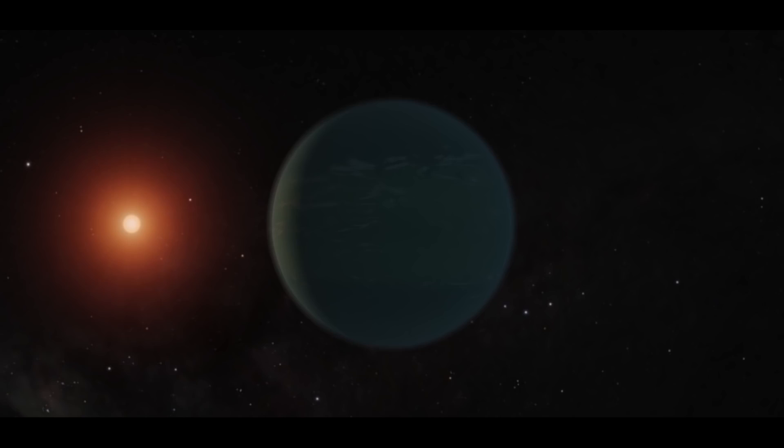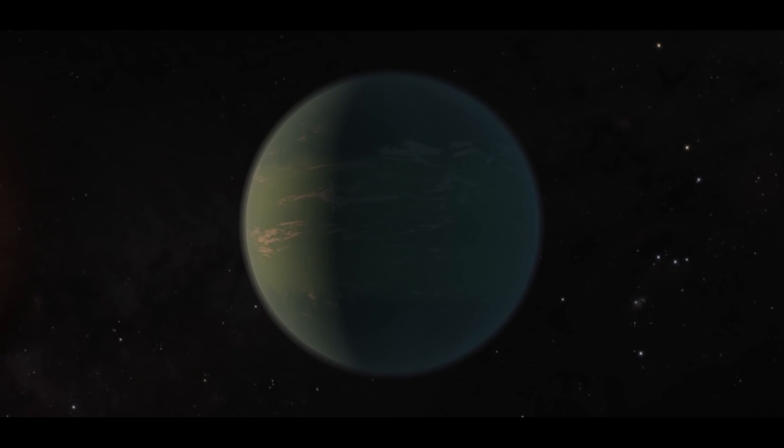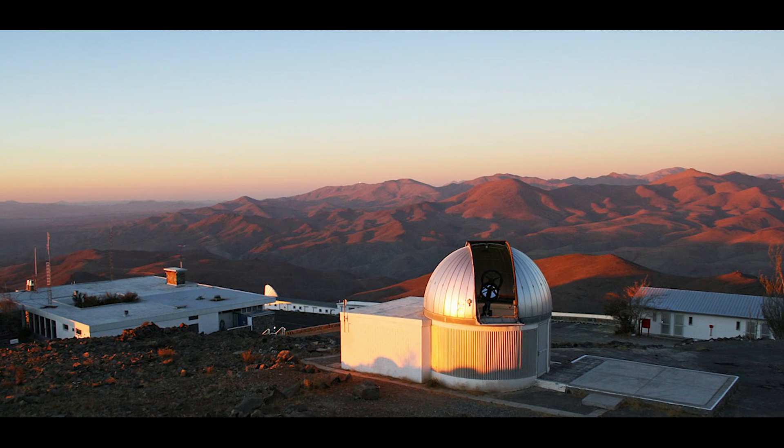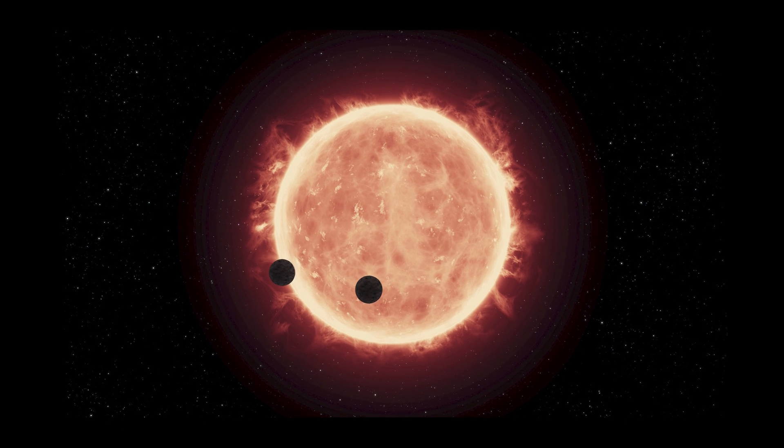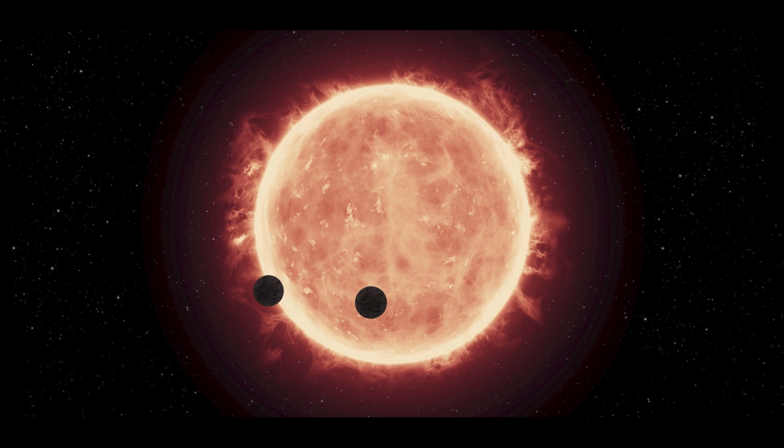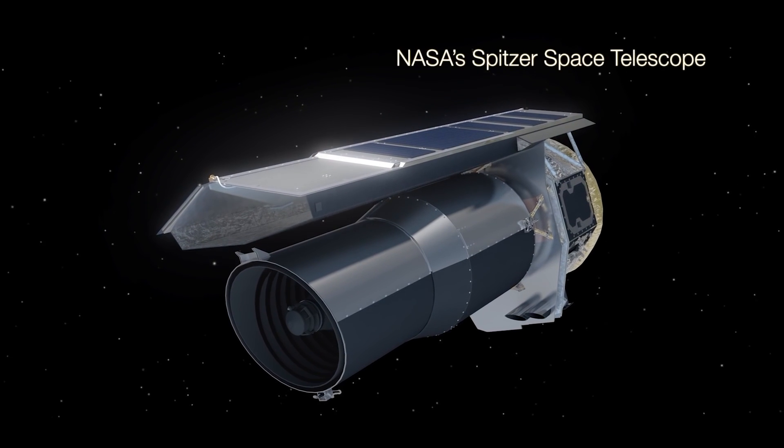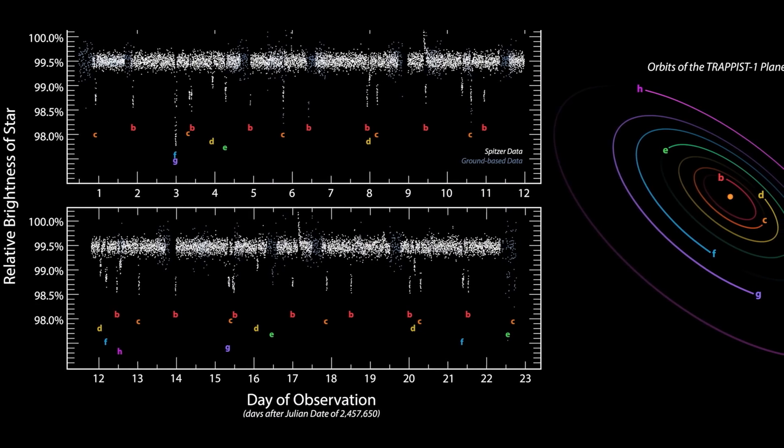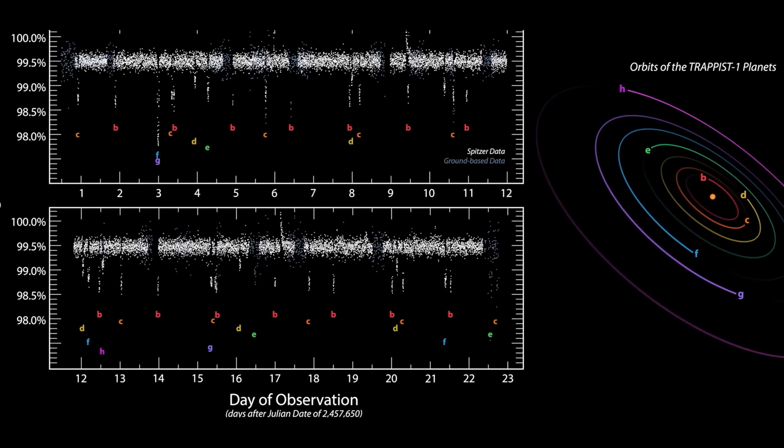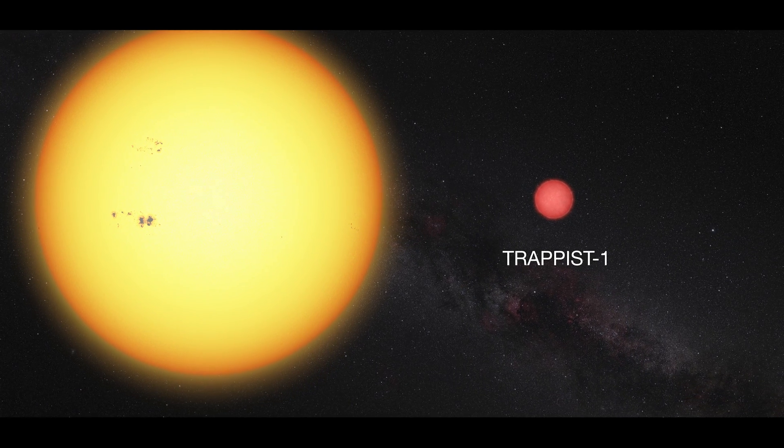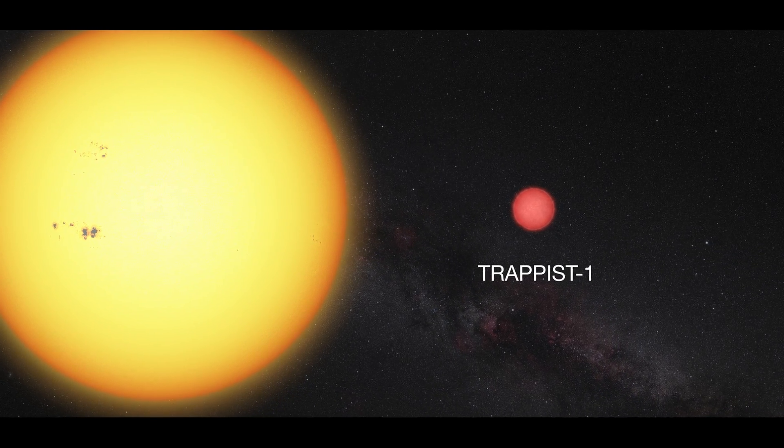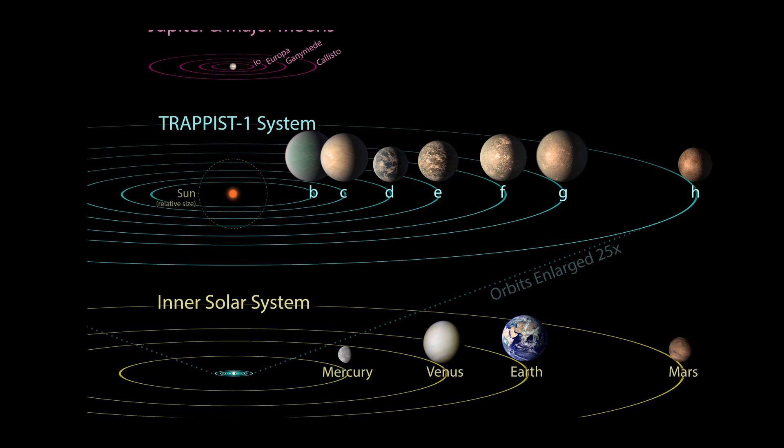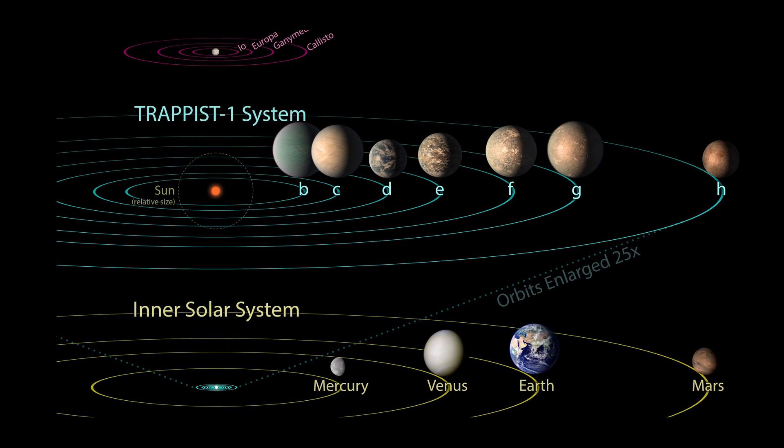The name of the planetary system comes from Transiting Planets and Planetesimals Small Telescope TRAPPIST at La Silla Observatory in Chile. In 2016, three Earth-like planets were initially discovered via the transit method and in 2017, NASA announced the discovery of four more Earth-like planets in this system thanks to the Spitzer Space Telescope. Since red dwarfs are much fainter in luminosity than our Sun, the inner planets have an orbital period of only 1.5 to 2.4 days, while the outermost planet has one of 20 days.